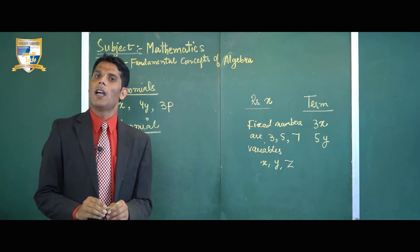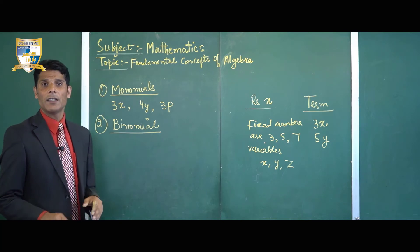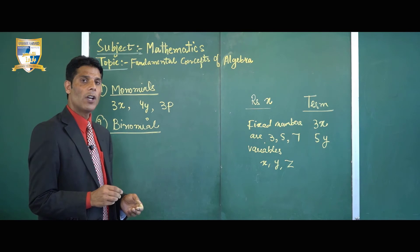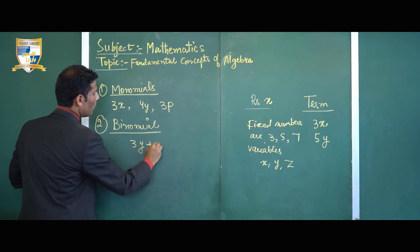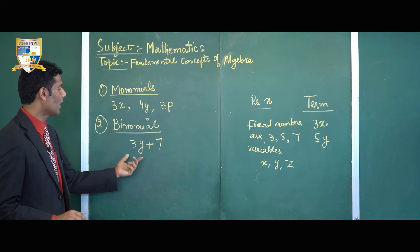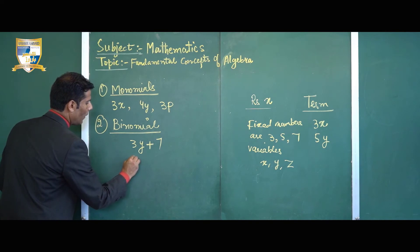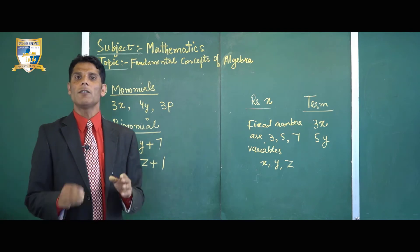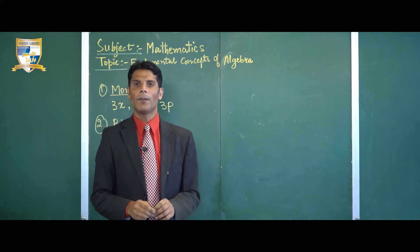The second kind is binomial. A binomial is that algebraic expression which contains two terms connected with addition, subtraction, multiplication, or division. For example, 3y plus 7 is a binomial because it contains two terms connected with a positive sign. Similarly, 7z plus 1 is also a binomial because it contains two terms.